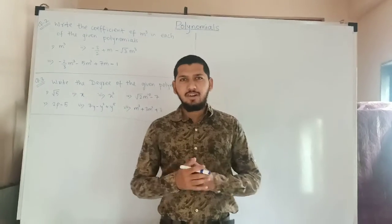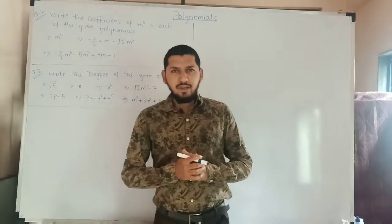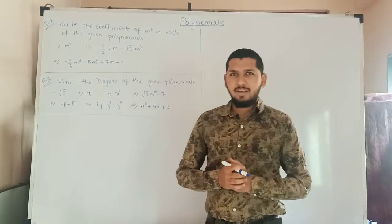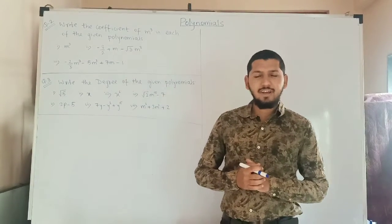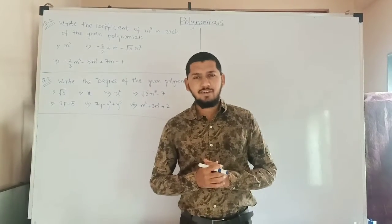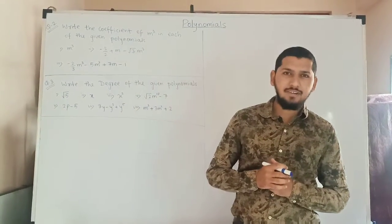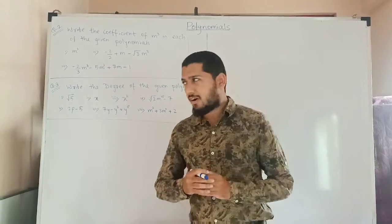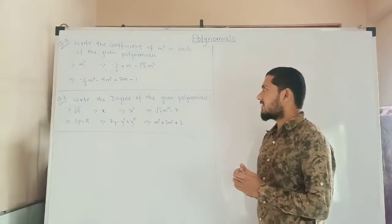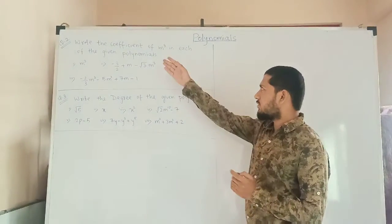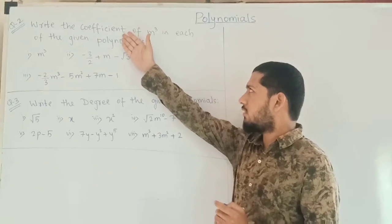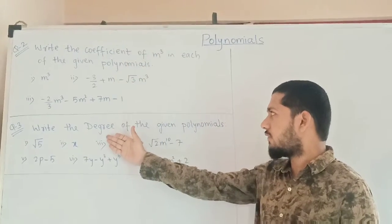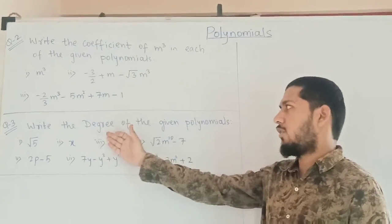Good morning students. Today we are going to start a new example on polynomials. In the last lecture we studied the definition of the polynomial and the types of polynomials. Now in this lecture we will discuss the coefficient of the polynomial variable and we will see the degree of the polynomial.